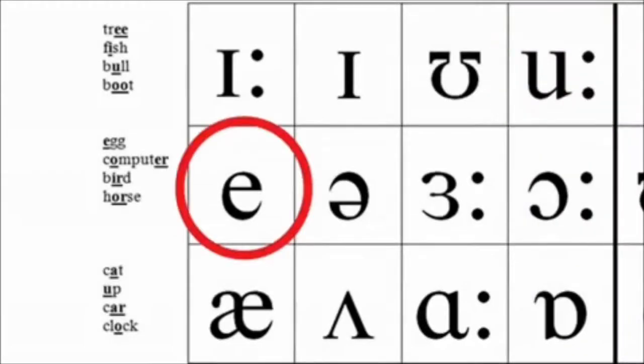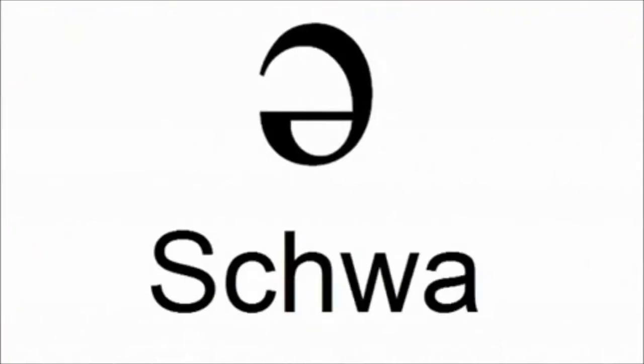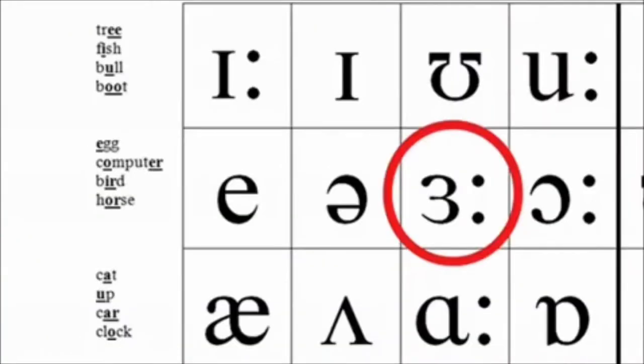e egg. ə computer. The schwa sound is the most common vowel sound in English. It's an unstressed vowel. ɜ: bird.